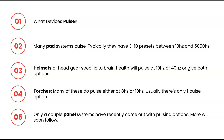So what devices pulse? Many pad systems pulse, typically with 3 to 10 presets between 10 and 5,000 hertz or pulses per second. Helmets or headgear for brain health will typically pulse at 10, 40, or both. Torches typically pulse at 5 to 10 hertz. Only a couple panels at this point are pulsing, but within a few years it will likely be the majority of devices.